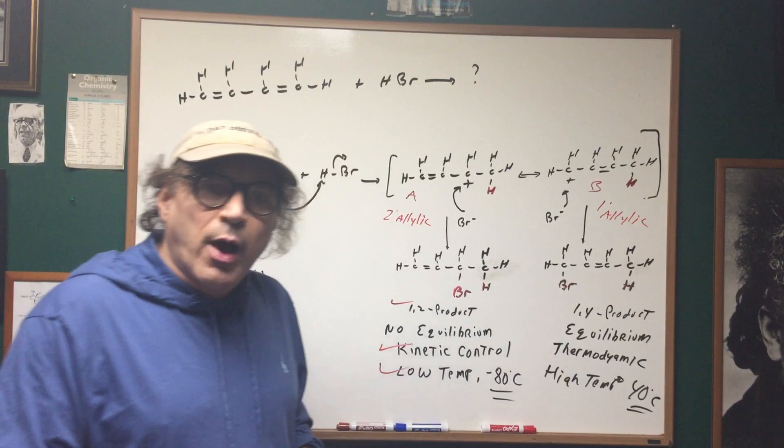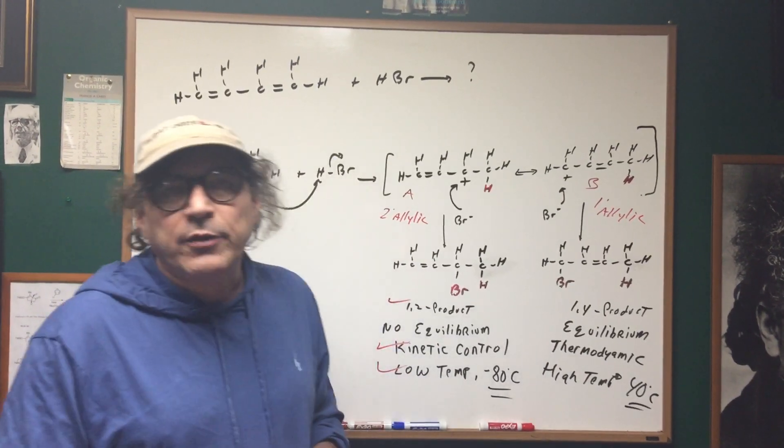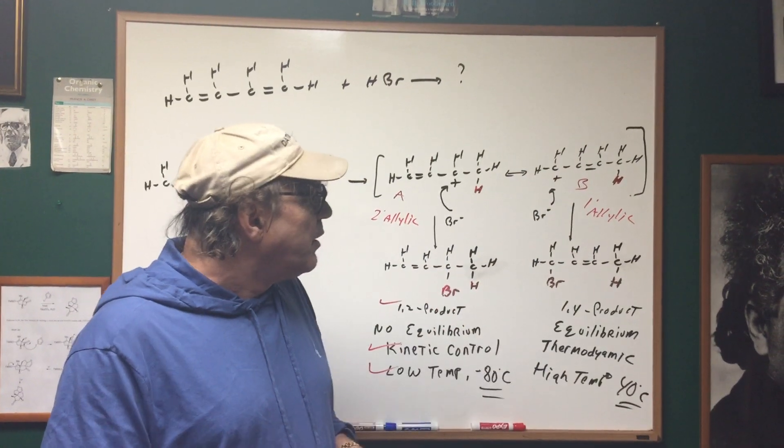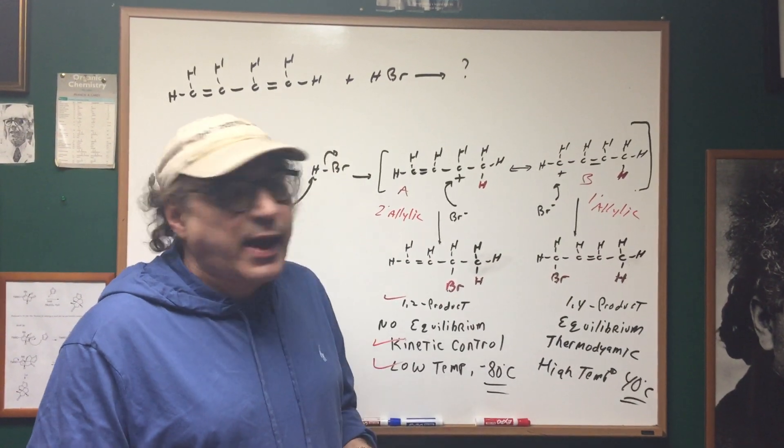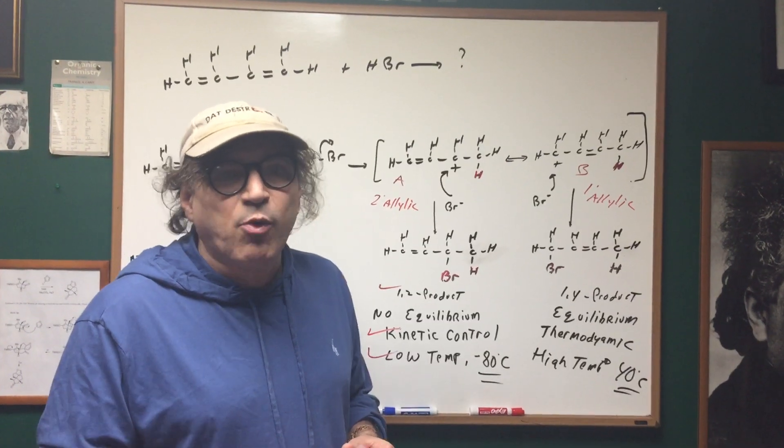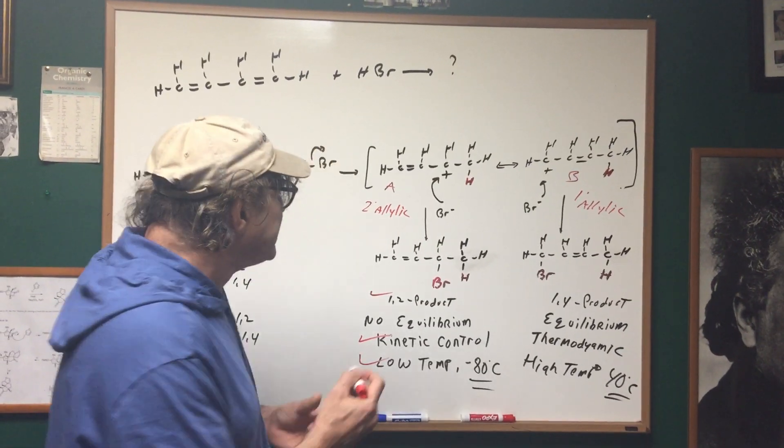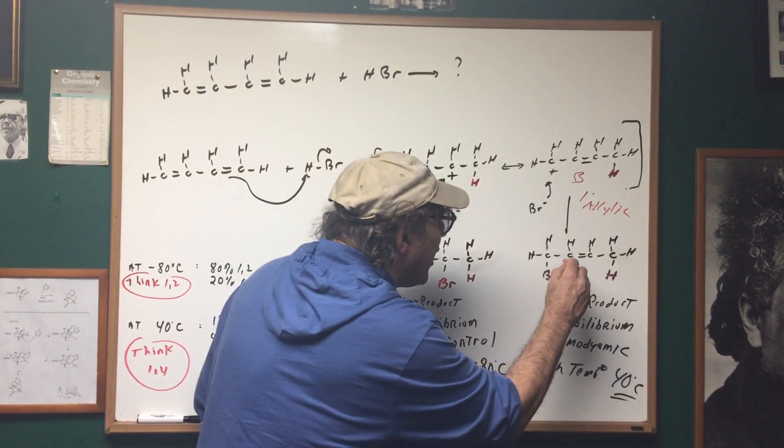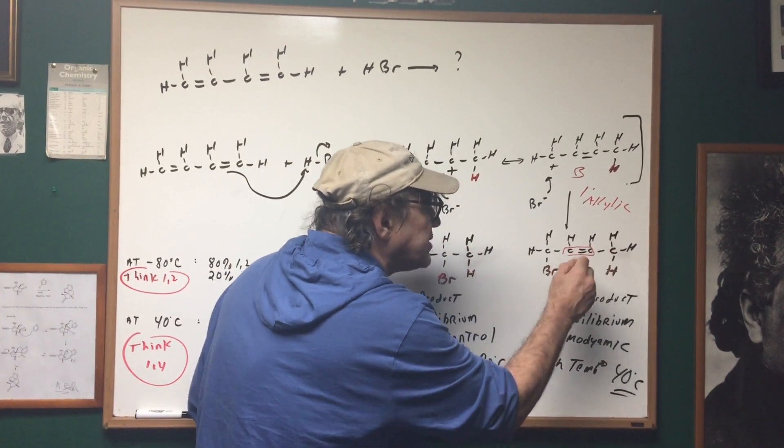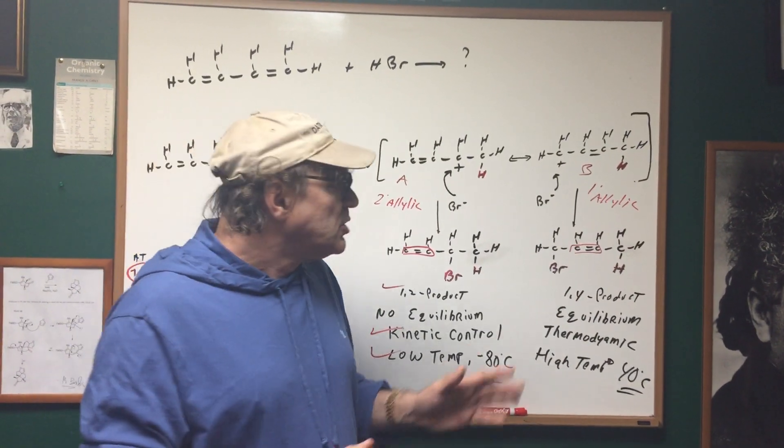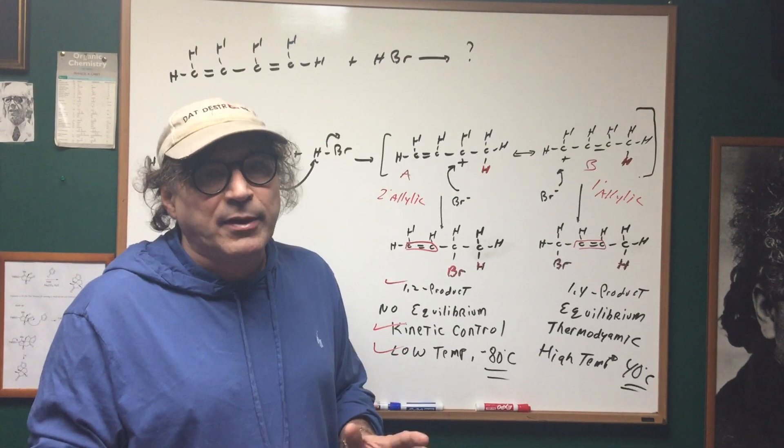Let's look at the 1,4 product. Even though the 1,4 product is slower, and it's slower as you can see because the carbocation wasn't as stable, look at the major product. The major product is more substituted. As you can see, if you went to here, this is only monosubstituted, whereas if you went to here, this is the more internalized double bond and it's disubstituted. So the product is more stable.